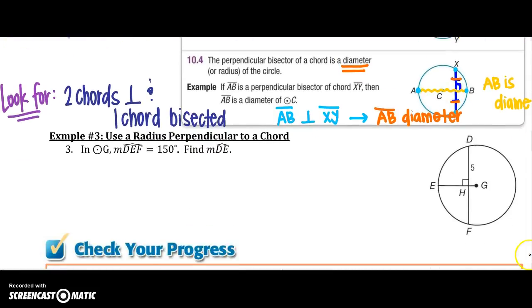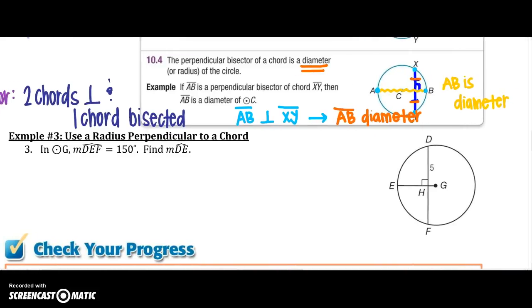All right, let's look at our example. In circle G, I know that arc D, E, F, so this arc right here is 150 degrees. I want to find arc D, E, so just this part right there. All right, so I see that E, G is a radius and is perpendicular to D, F.